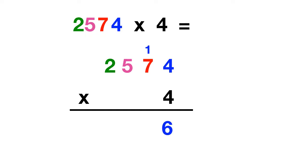Next we multiply 4 times 7, and then we have to add in this 1. Well, 4 times 7 is 28, plus that 1 is 29.